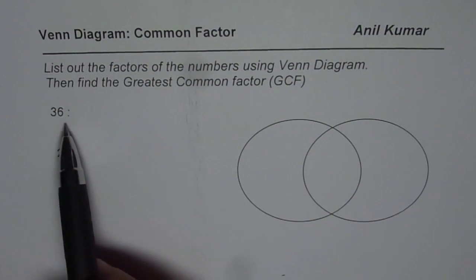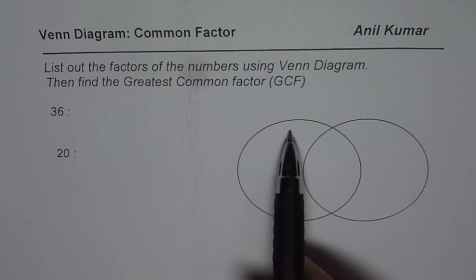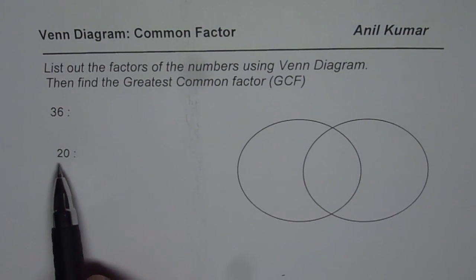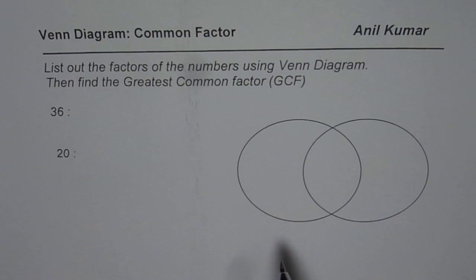Numbers given to you are 36 and 20. Now these two circles, in the first circle write factors of 36, in the second circle write factors of 20. The factors which are common to 36 and 20 should go in the center part and the greatest among those will be greatest common factor.